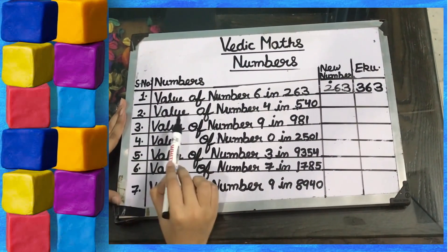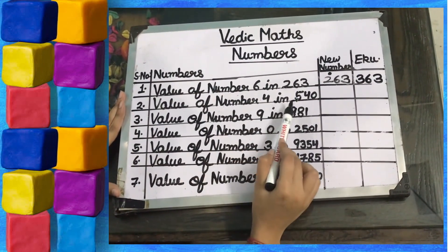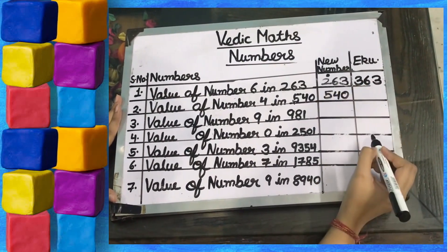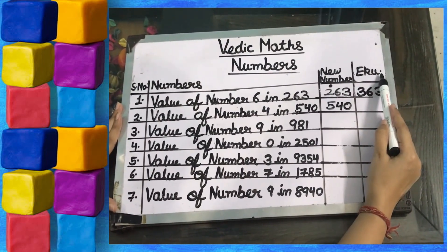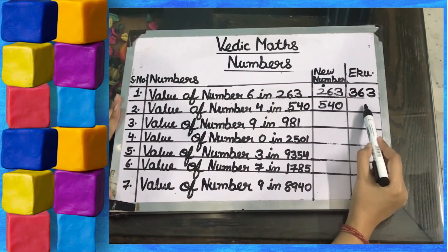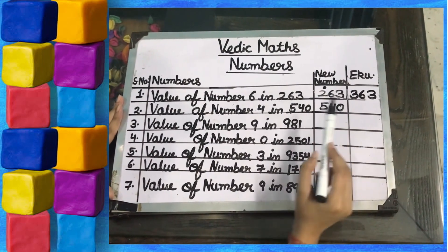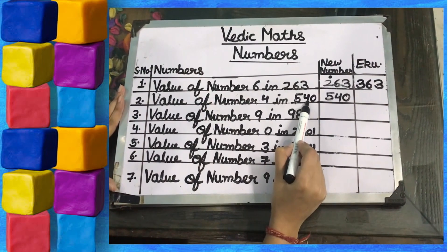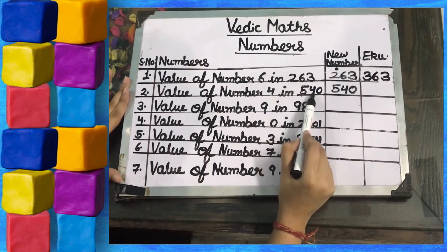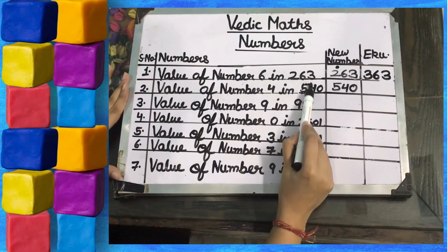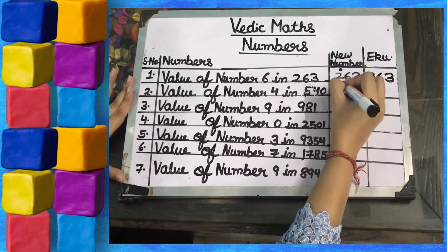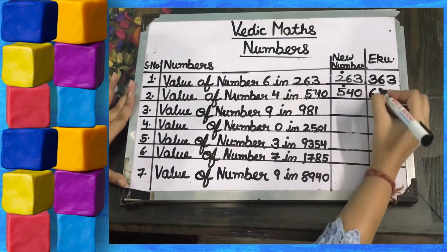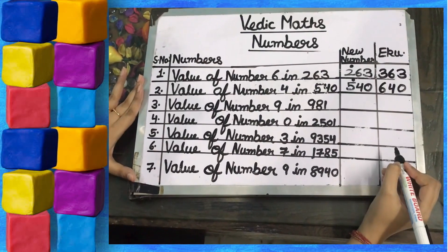Second part — value of number 4 in 540. We write the number 540. We need to find the Ekadiken Purven, which means plus 1 in the previous digit. The previous digit of 4 in 540 is 5, so we put a dot on 5. 1 plus 5 is 6. The 4 remains the same and 0 also remains the same.